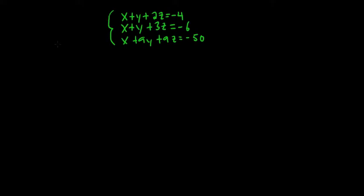Hey everyone, in this video we have to solve this system of equations. The idea is we take two equations and we eliminate a variable, and then we take another two and eliminate the same variable. I'm going to go ahead and number the equations: one, two, three.